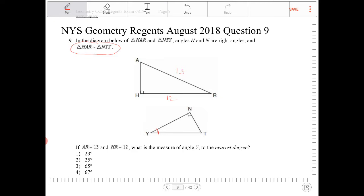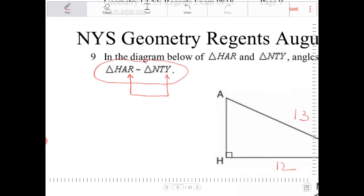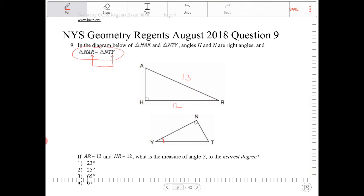Which angle does correspond with angle Y? Which angle in HAR corresponds with angle Y? Looking at the notation here, it is important for you to understand how to read the triangle information here. I can see here Y corresponds with R. Because Y corresponds with R, I'm going to try and figure out what angle R is here.